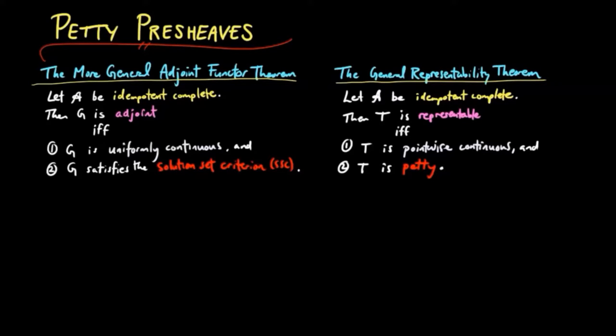Now we're going to show that G satisfies the solution set criterion if and only if the associated pre-sheave for each B is petty. We have not yet defined petty, but knowing how to translate functors into pointwise pre-sheaves, we can always construct a definition.